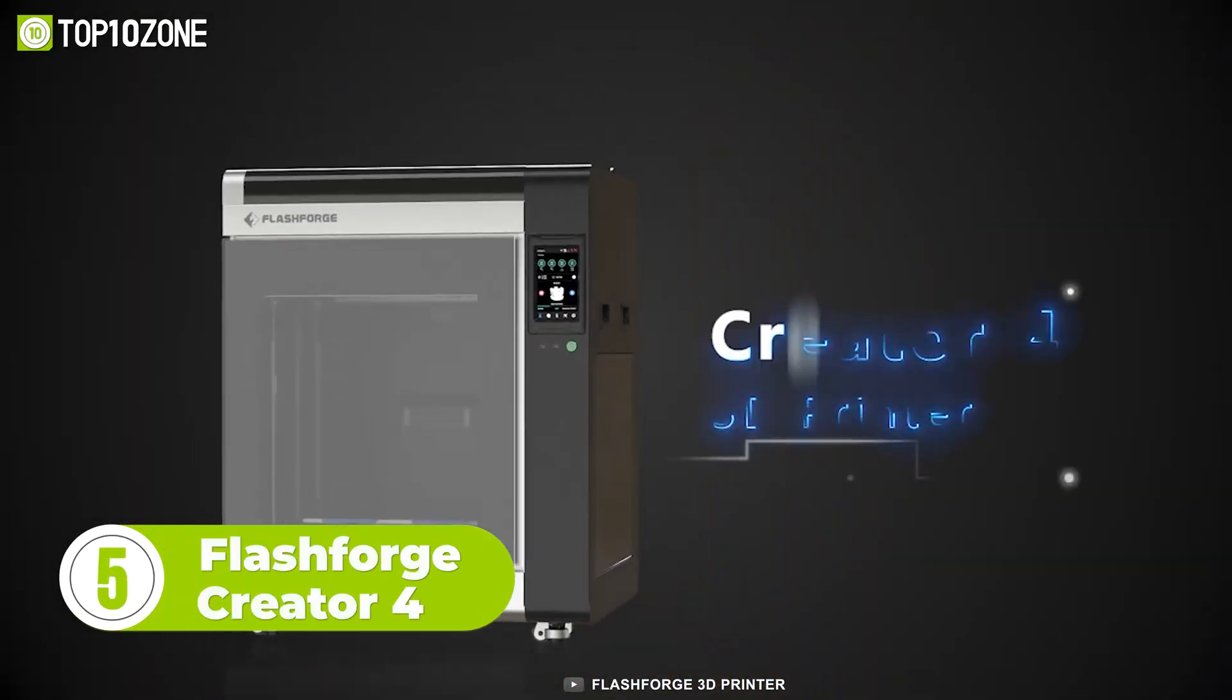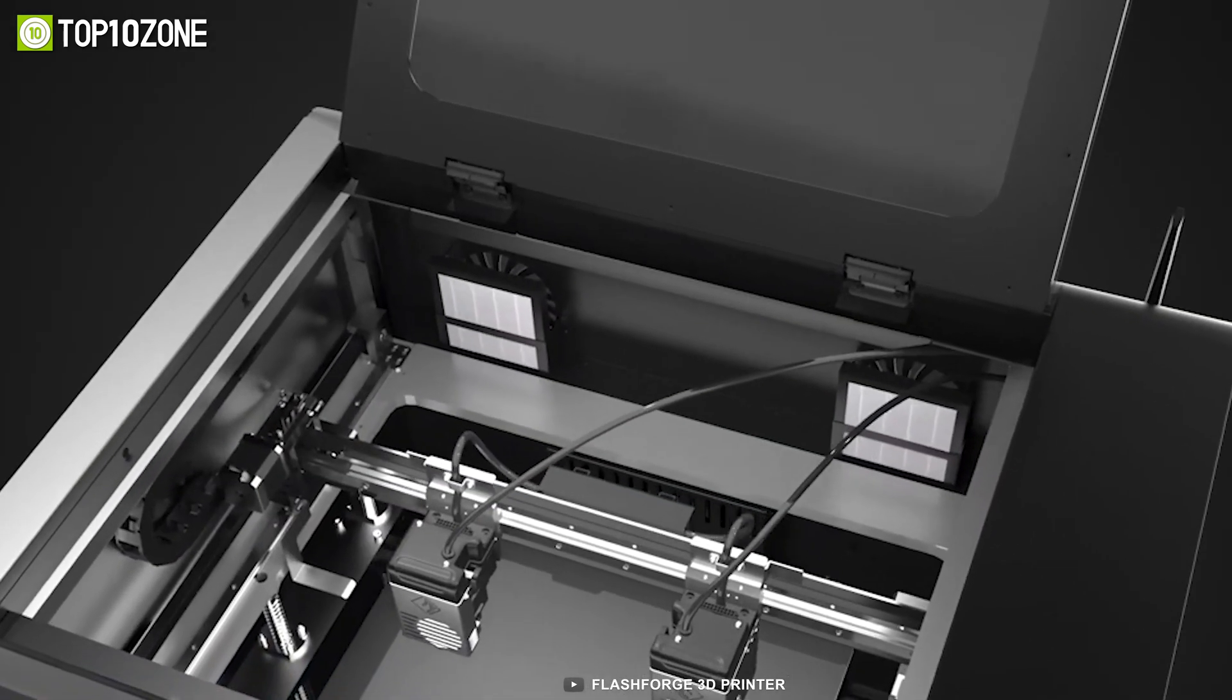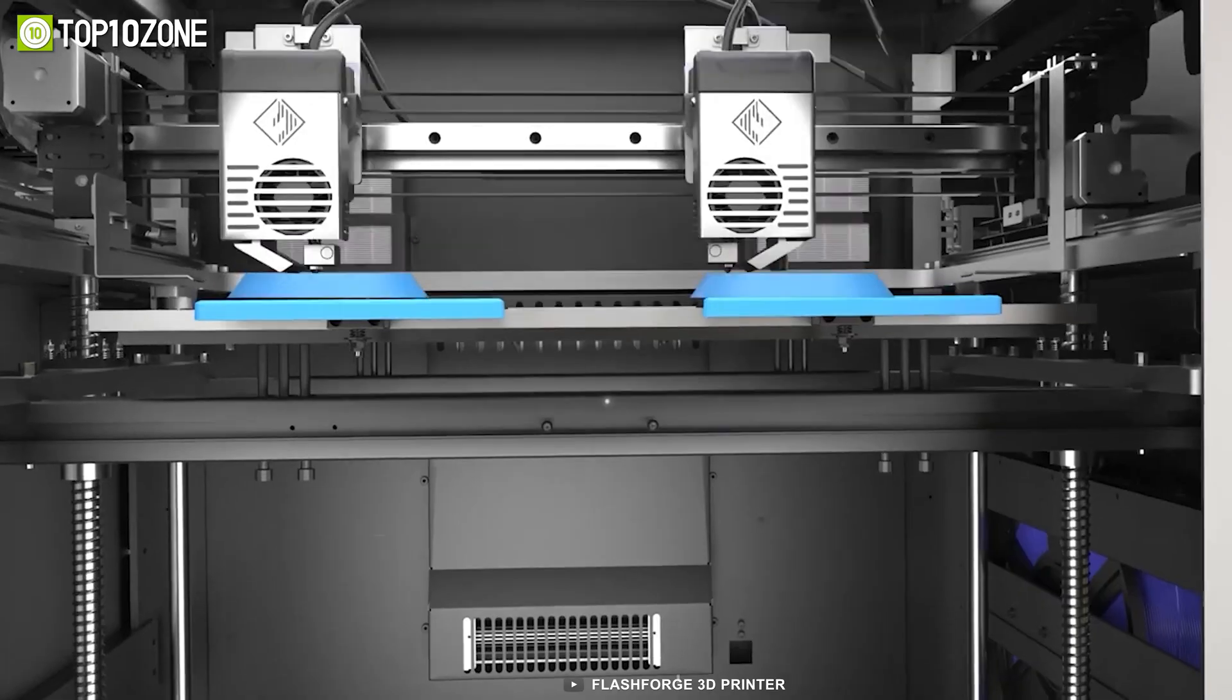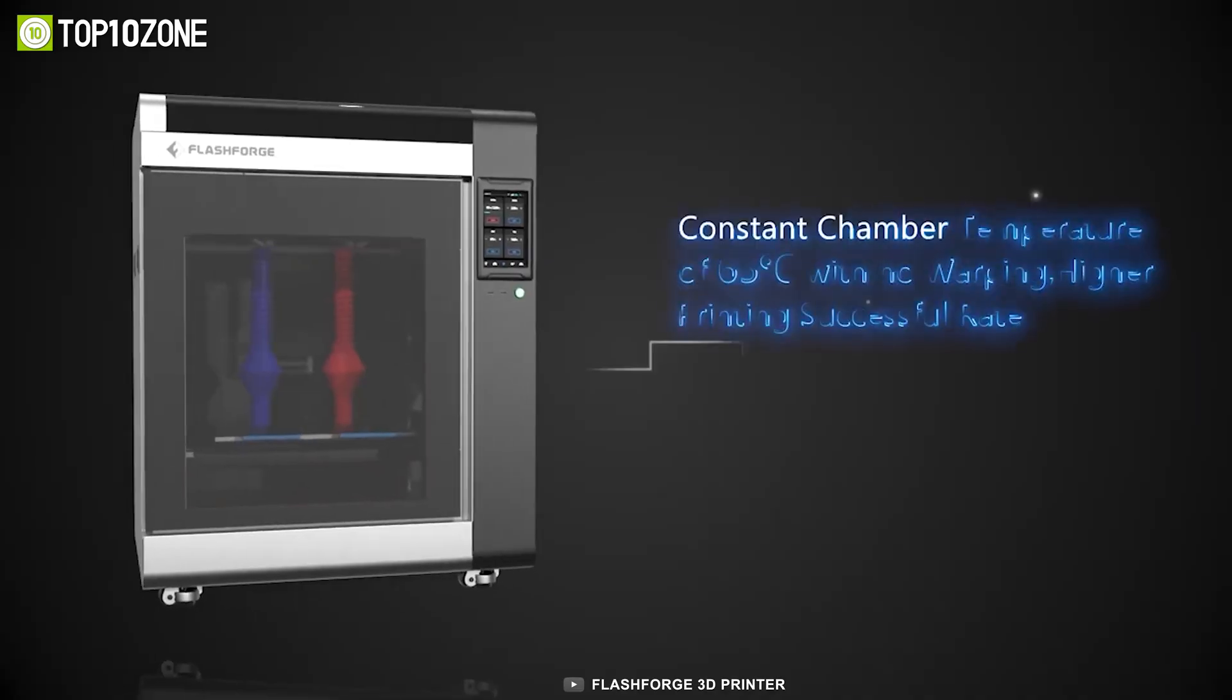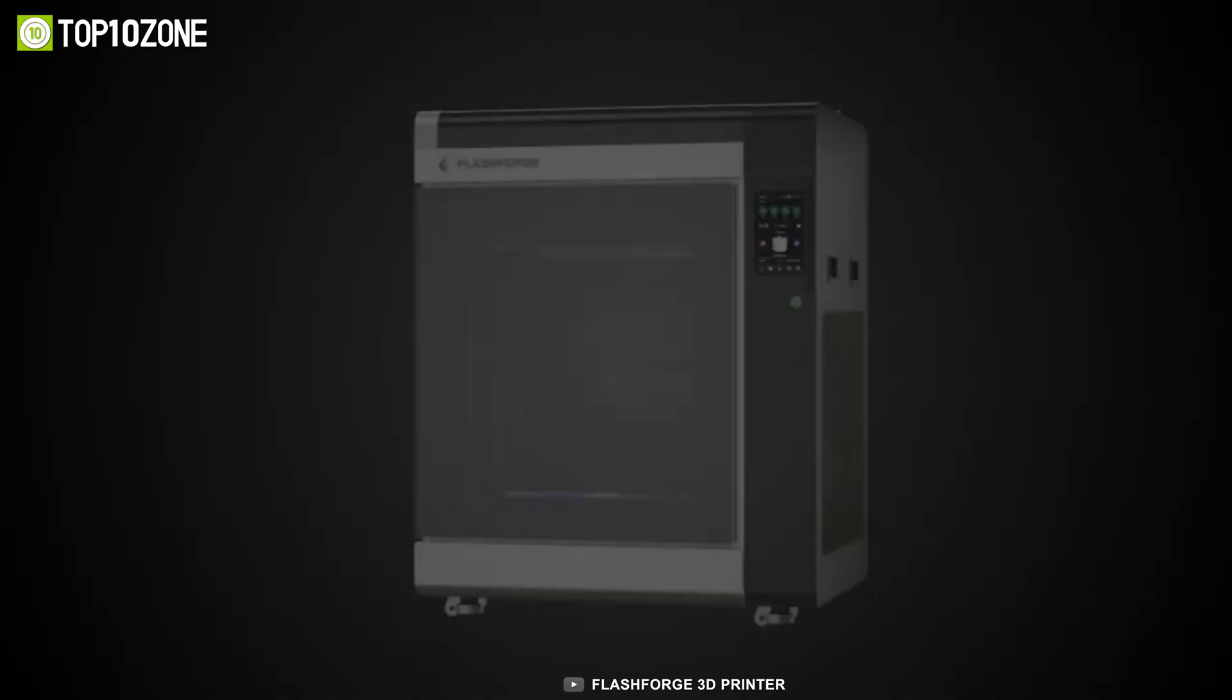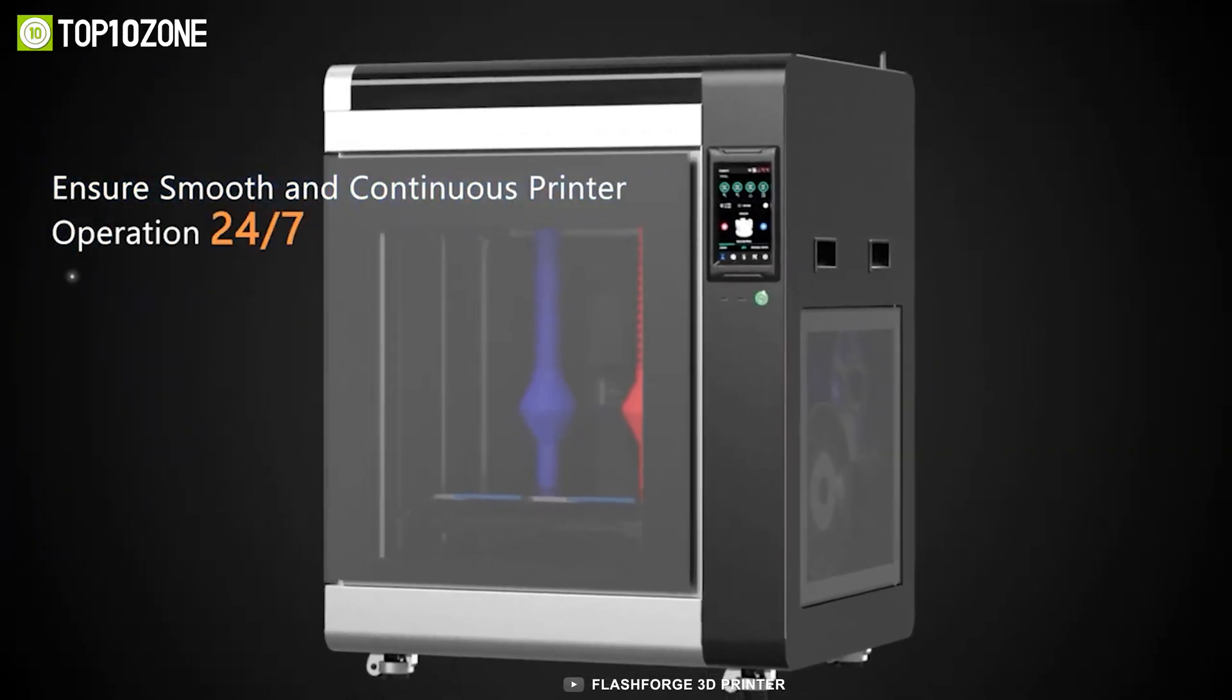A good choice for commercial production, the FlashForge Creator 4 can print with all kinds of filaments to craft your creative projects. It is equipped with dual extruders that work independently to double your outputs. The internal temperature maintains an optimal level to ensure good print quality. This printer features an S-Type motion control system for smoother prints.